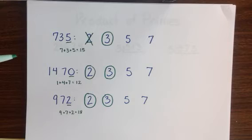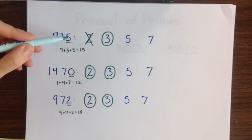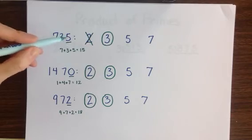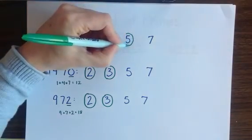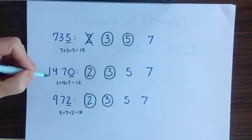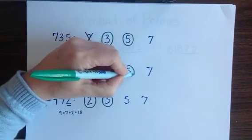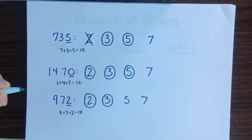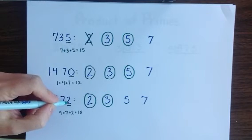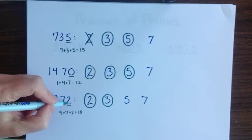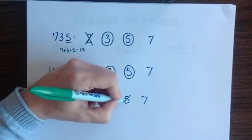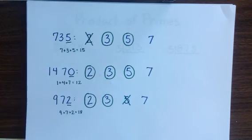Checking for the rule of 5's, we have to look again at only the last digit. 735 ends in a 5, therefore it is divisible by 5. And 1470 ending in 0 is also divisible by 5. But 972, since it ends in a 2, not a 0 or a 5, will not divide evenly by 5.